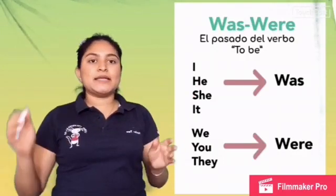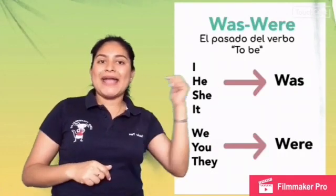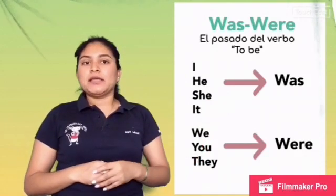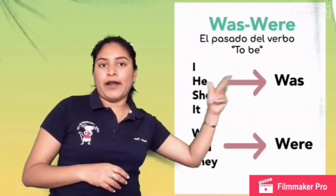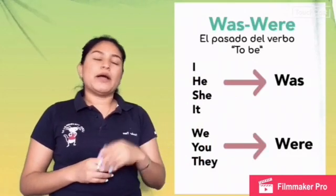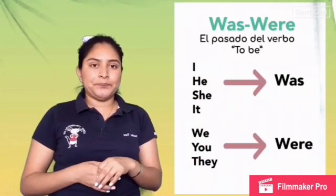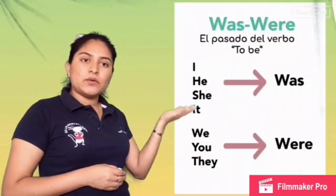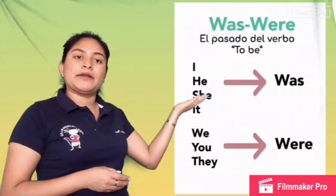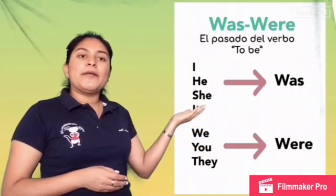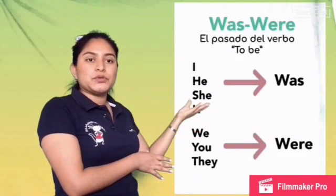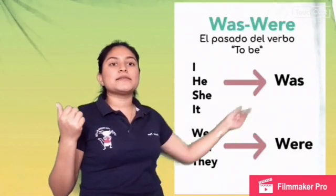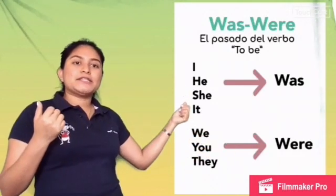The verb 'to be' in the present is: am, is, are. For example: I am a teacher. You are a student. He or she is my friend. We, you, they are doctors. You have plural and singular subjects. Use 'was' with I, he, she, and it.